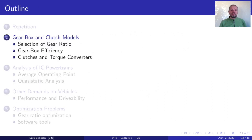That was the repetition. Now we are ready to go into the new material for this lecture. We will look at gearbox and clutch models, the selection of gear ratios, and how the gearbox couples the road profile to the engine operating points, giving the connection between road load and fuel economy.